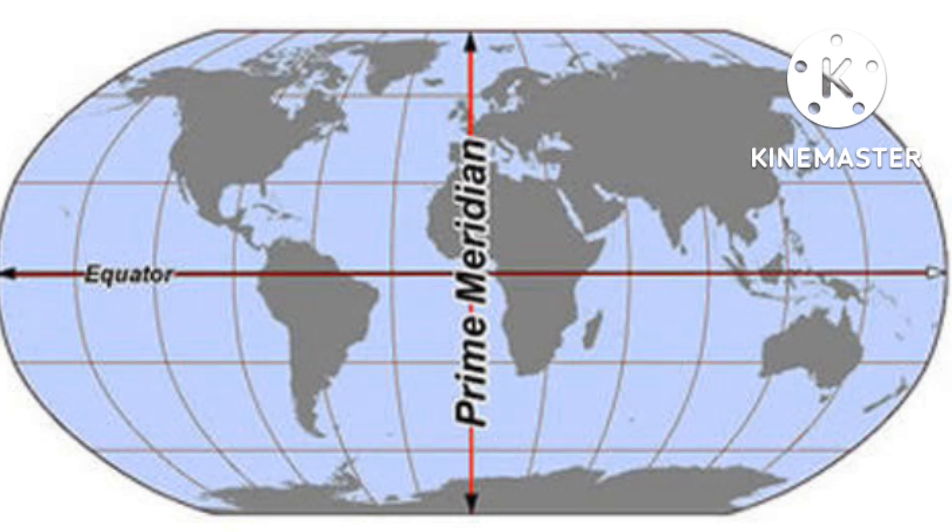The prime meridian is situated at zero degree longitude. It separates the eastern hemisphere from the western hemisphere.